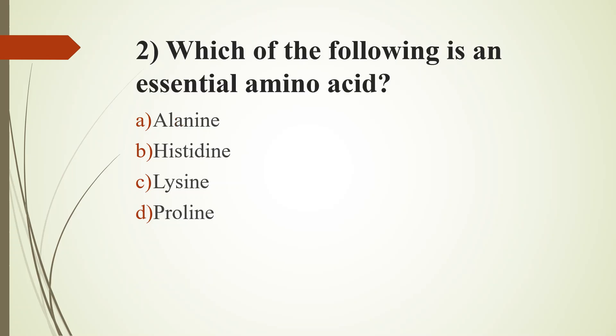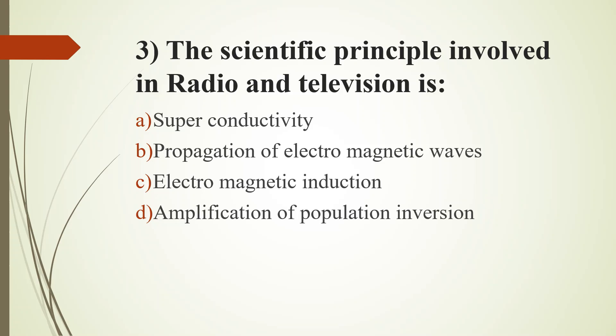Second question, which of the following is an essential amino acid: option A, alanine; option B, histidine; option C, lysine; option D, proline. Answer is option C, lysine. Third question, the scientific principle involved in radio and television is: option A, superconductivity; option B, propagation of electromagnetic waves; option C, electromagnetic induction; option D, amplification of population inversion. Answer is option B, propagation of electromagnetic waves.